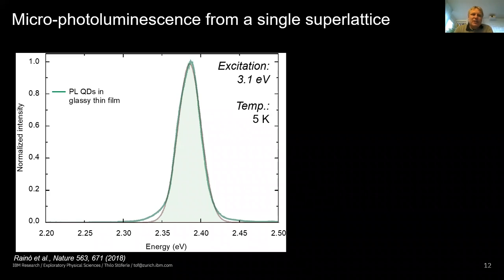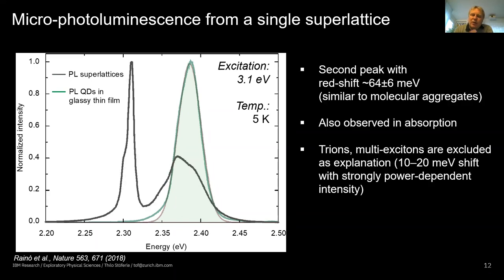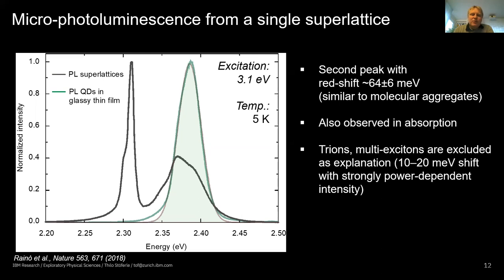In the superlattice system, for comparison: classic quantum dot film emission shows the normal luminescence from the supercristal constituents. When looking at PL from individual supercrystals, you see residual luminescence at the original quantum dot emission energy, and a new red-shifted peak emerging with a small substructure. The energy shift depends on composition — for bromide-chloride versus bromide-only halide nanocrystals it varies — but is on the order of 60 to 100 meV, much larger than expected for trions or multi-excitons.